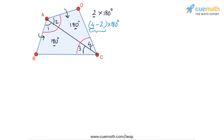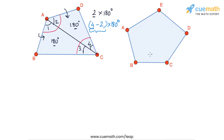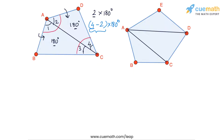Now let's take a pentagon and find the sum of angles A plus B plus C plus D plus E. Using the same logic as the quadrilateral, let's divide the pentagon into triangular parts. From vertex A, let's draw diagonals AC and AD. We now get three triangular parts from these two diagonals.